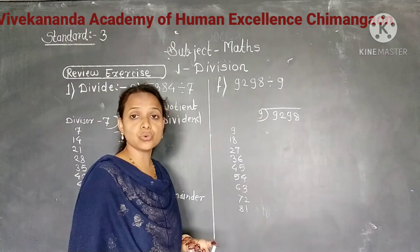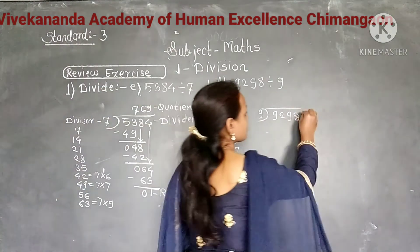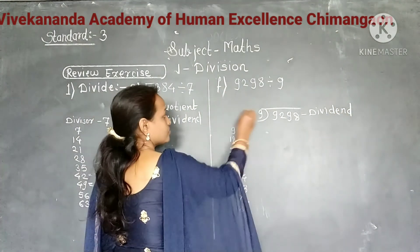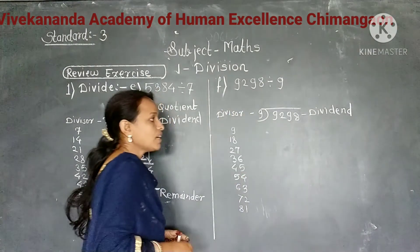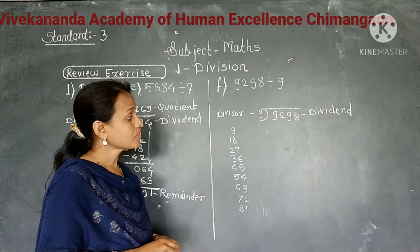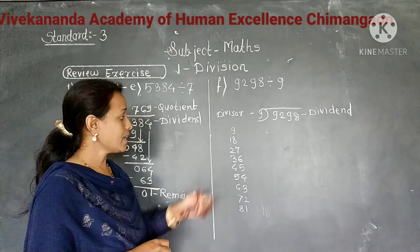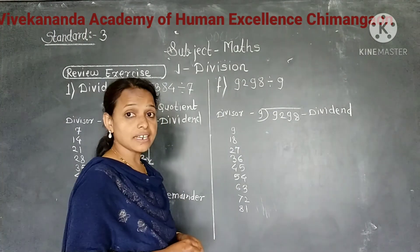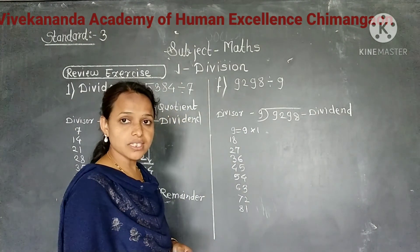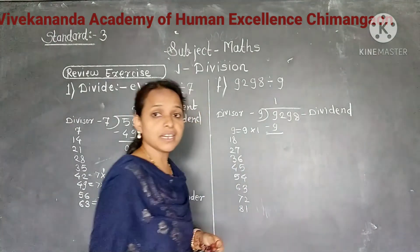Next example: 9298 divided by 9. Here 9298 is the dividend and 9 is the divisor. We write the dividend and divisor in the correct places and write the multiplication table of 9. Now we start division from the thousands place. The digit in the thousands place is 9. So we divide 9 by 9. 9 comes in the first place of the multiplication table of 9. It gives 1 as a quotient. Write 1 as a quotient in the thousands place and write product 9 below 9. Subtract, it gives 0.